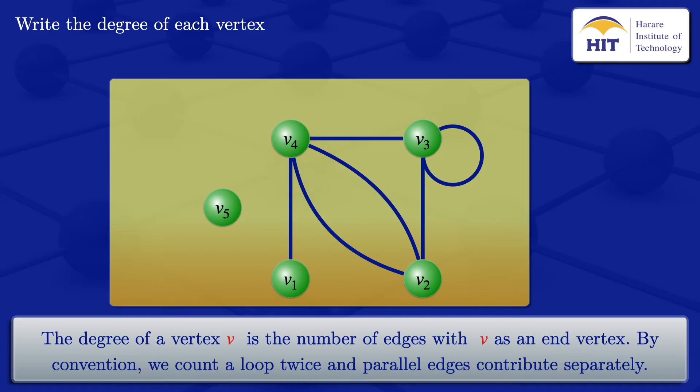By convention, we count a loop twice and parallel edges contribute separately. So looking at this vertex here, vertex V1, it is an end vertex of this edge, only one edge. So we have that the degree of vertex 1 is equal to 1.